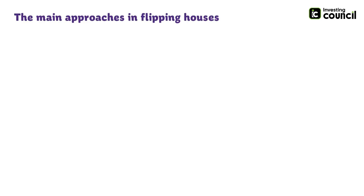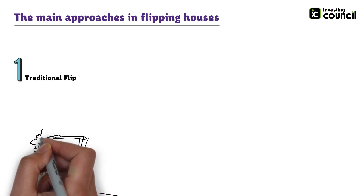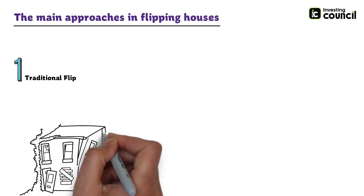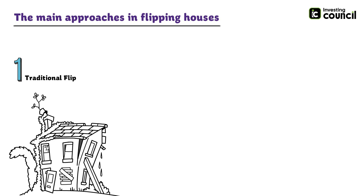Let's start with an overview of the main approaches in flipping houses before we examine its advantages and disadvantages. There are several approaches to the house flipping real estate investment strategy, and each approach has its own pros and cons. The main approach is the traditional flip — the most common approach where an investor buys a property that requires some work, renovates it, and then sells it for a profit, buying low and selling at a higher price.